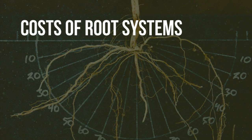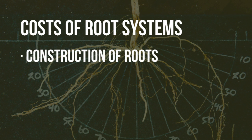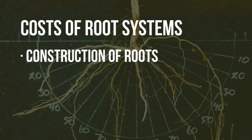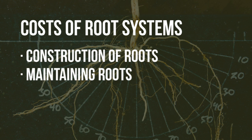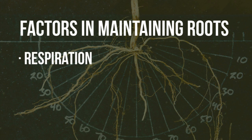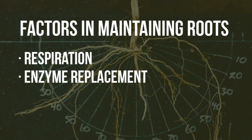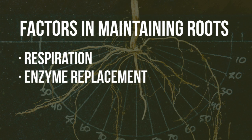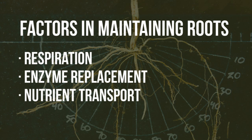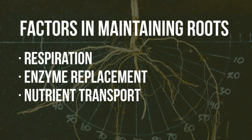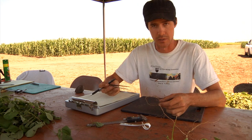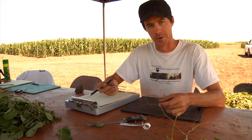When doing this analysis, some of the costs to consider include construction cost — how much photosynthetic assimilates it takes to construct a given root — and also how much it takes to maintain that root. Factors involved in maintaining a root include respiration, since that root is alive and has to respire. It also includes replacement of enzymes, since there is enzymatic turnover and those enzymes are expensive to create. Nutrient transport itself requires the production and expenditure of ATP to create a transmembrane potential that allows certain ions to be transported in.